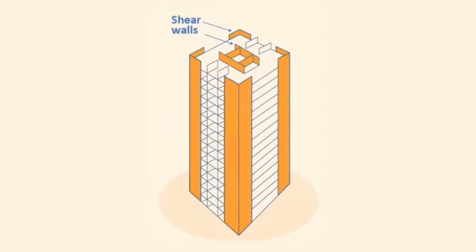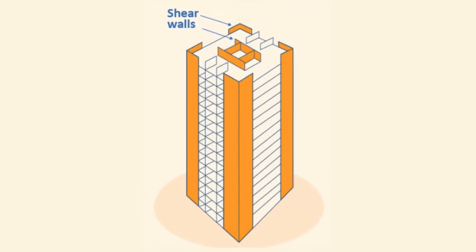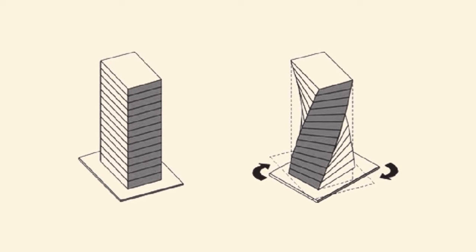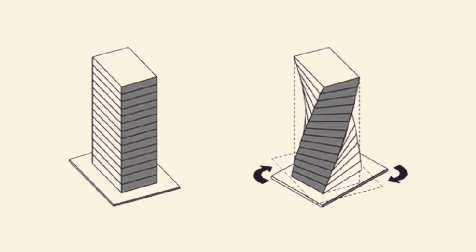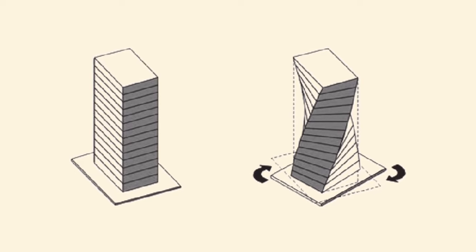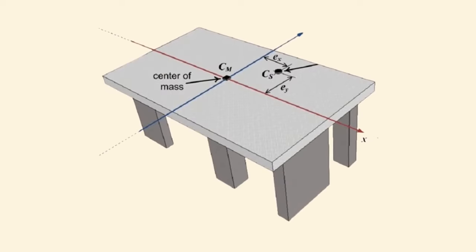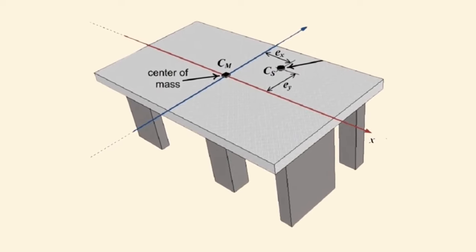In large projects, the shear wall should be properly positioned. To avoid torsion in the building during ground movements caused by an earthquake, it is important to make sure the center of lateral mass matches the center of stiffness.